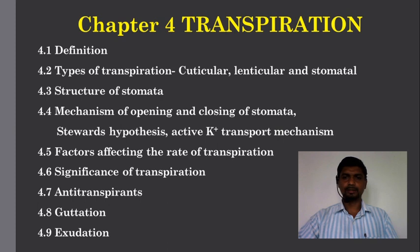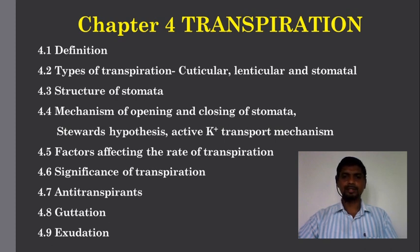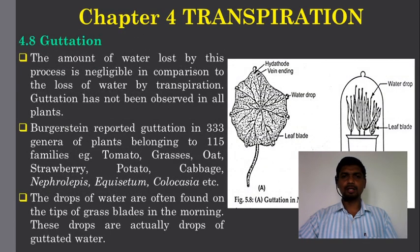The last two topics are guttation and exudation. During transpiration, loss of water takes place from the aerial part of the plant — about 98% of water loss takes place through stomata. In addition to this, guttation and exudation are two important phenomena through which water loss also takes place from the plant. The amount of water lost by these processes is negligible compared to loss by transpiration.